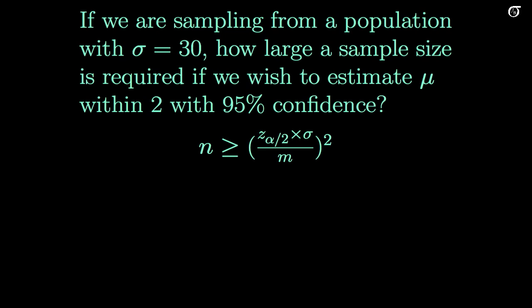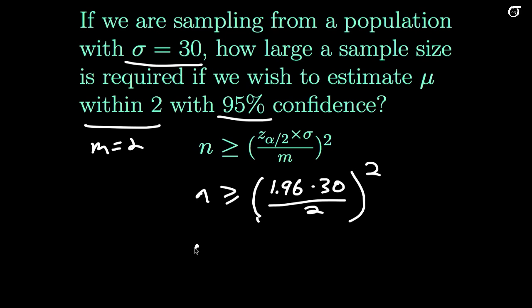We get our formula for n and plug in our values. This 'within 2' is the same as saying my m is 2. My sigma is 30. I need to know what this 95% confidence means in terms of my z value. We need z alpha over 2 to be 1.96 for 95% confidence. I multiply that by 30, divide by 2, and square the whole thing. And then I get n greater than or equal to 864.36.